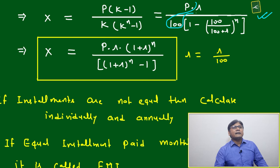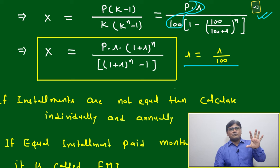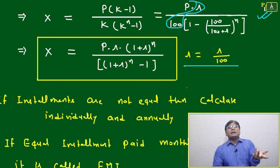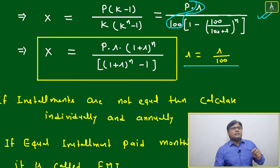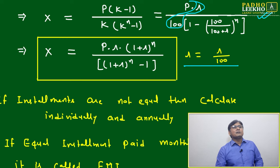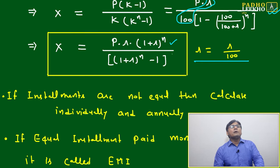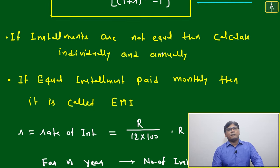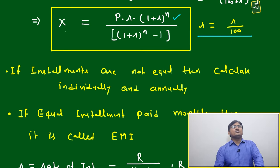Writing r/100 as r in fractional or decimal form, the same formula converts to: x = P · r · (1 + r)ⁿ / [(1 + r)ⁿ - 1]. This is your equal installment formula. Here r represents the rate as a fraction or decimal, not a percentage directly.